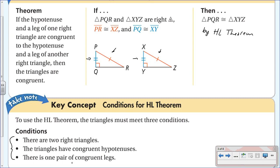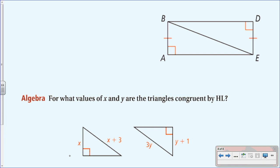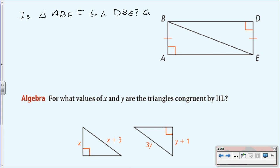Your triangles have to pass all three conditions in order to be congruent by HL theorem. Let's look at this problem: is triangle ABE congruent to triangle DBE? Explain. Condition one — are they right triangles? Yes, both have a right angle marked.